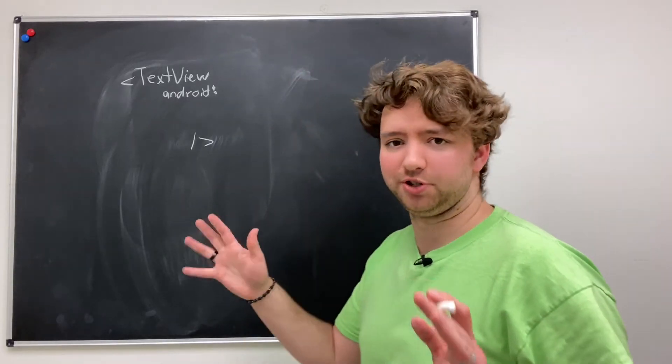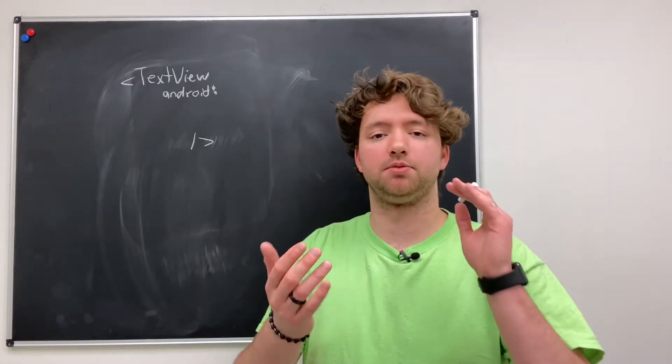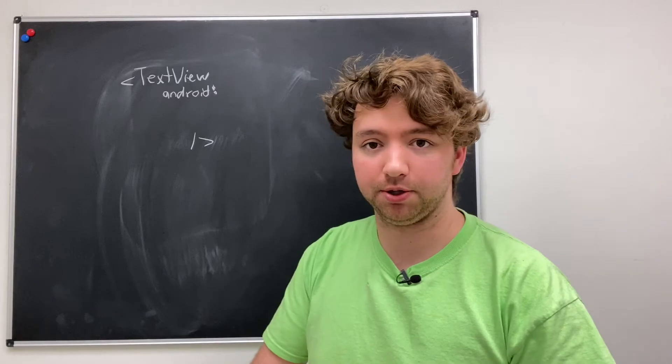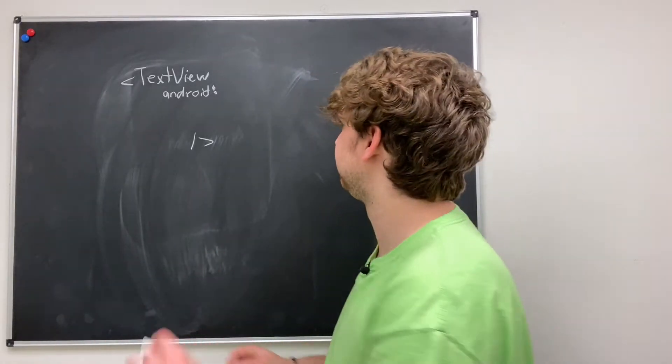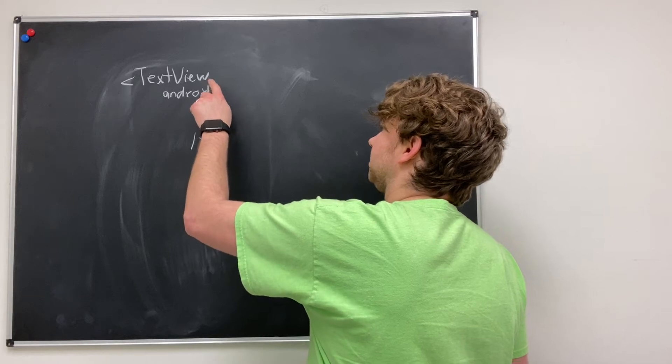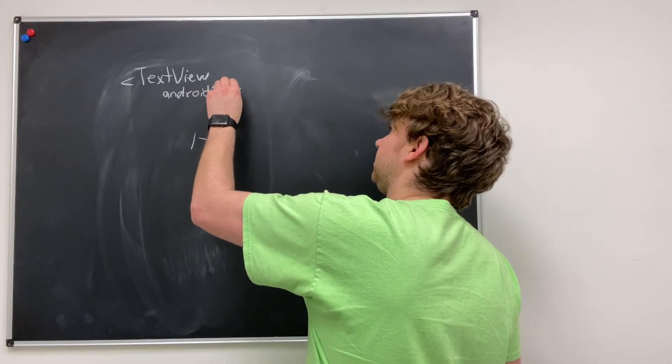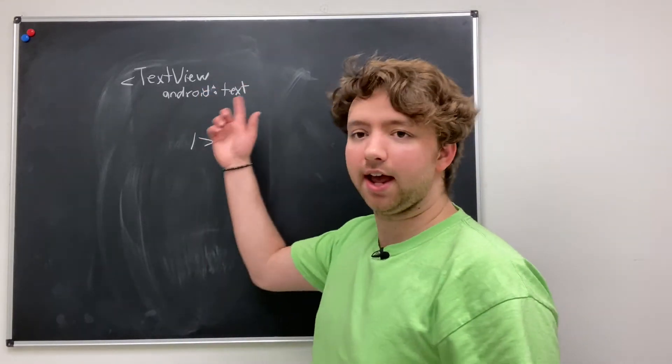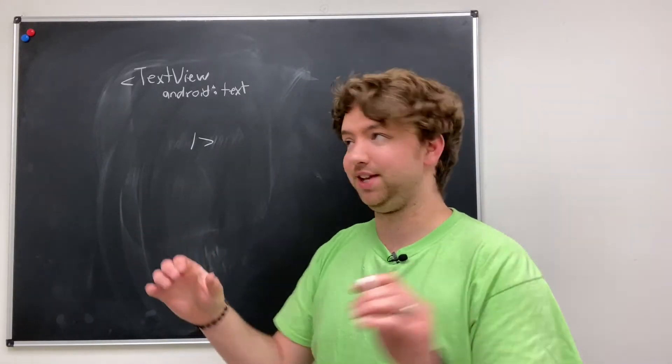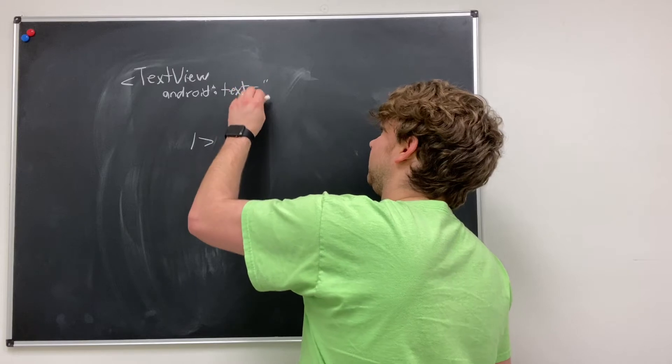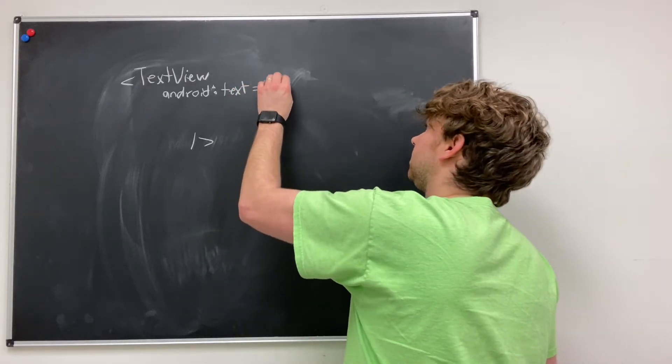You can use those interchangeably, but in this context it's more appropriate to say attribute. But just so you understand, they are the same concept. So Android, and then we'll have something like text. And this is the text attribute, which describes what the word that shows up is. So we can say equals hello world.